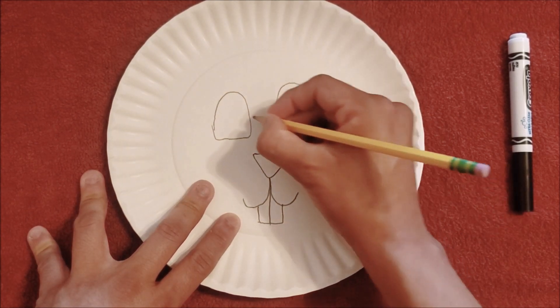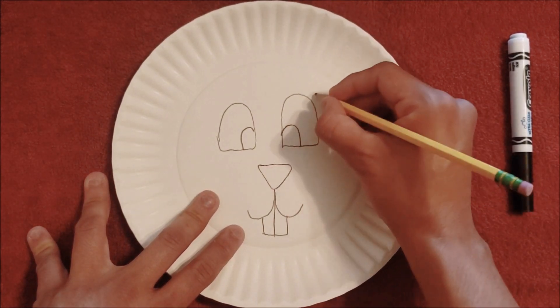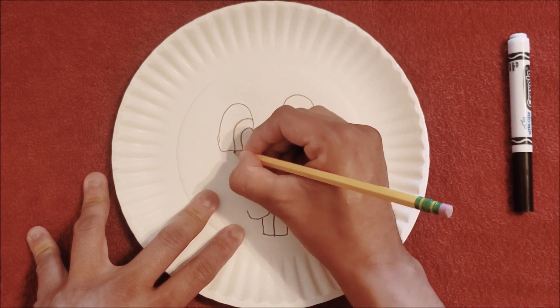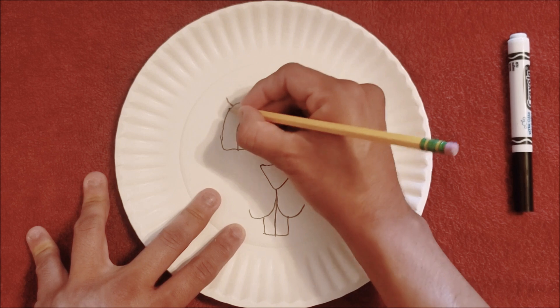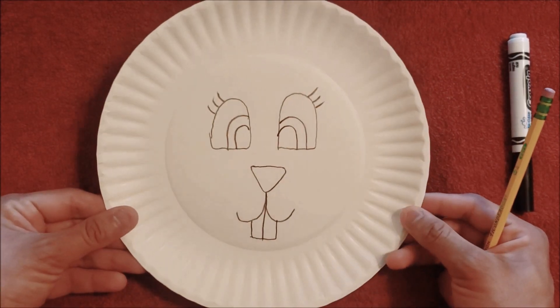So there's my head. And again, you guys can make any face you like. It can be simple, it can be complicated. Well, maybe not complicated, because then your child won't be able to do it. Okay, I'm going to give mine some little whiskers. Perfect. So there's my head.